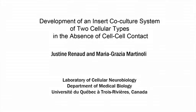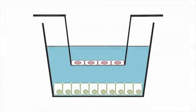The overall goal of this procedure is to create a cellular co-culture system of two cell types using inserts with a permeable membrane, thus allowing the diffusion of secreted soluble factors. This is accomplished with a series of steps that finally place inserts containing one cell type in a multi-well tissue culture plate containing a second cell type.